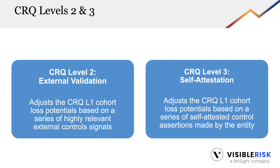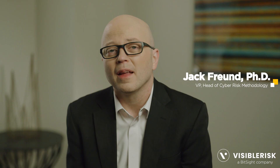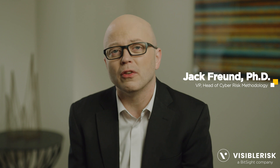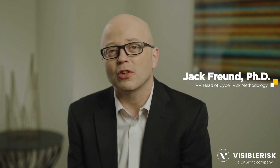Level two and three have similar levels of fidelity. We adjust that peer baseline using either an externally validated set of data, or we use a series of questionnaires and survey tools that allow your organization to respond to what their own loss potential and control states look like. These things allow organizations to scale or adjust those losses so that they're more specific to your organization. Finally, the most validated and most reliable is CRQ level four. This uses inside-out data — actual data derived from measuring the control states within your organization — and then uses the results of those assessments to scale the peer baselines assessed in CRQ level one.